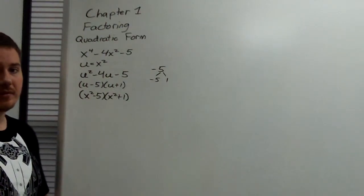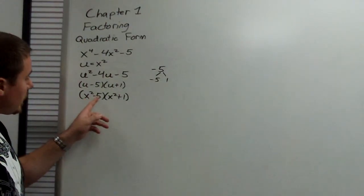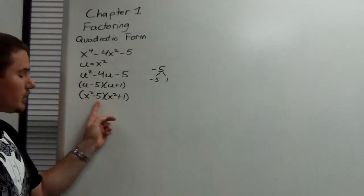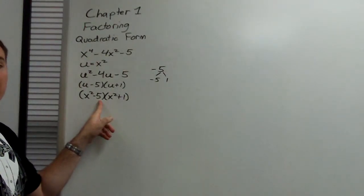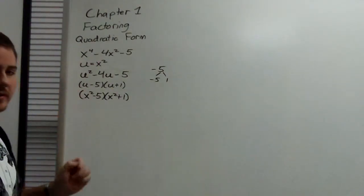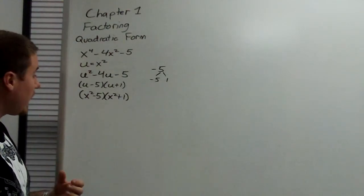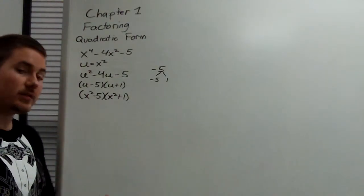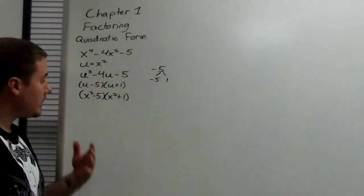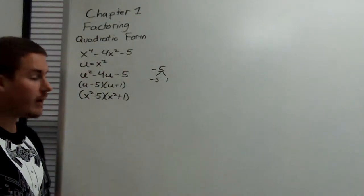Now, we may have more steps, but we need to check. x squared minus 5. If that 5 were a perfect square, we'd be tempted to do difference of squares and proceed to factor it further. But, we can't. x squared plus 1, there is no formula for sum of squares, so that is prime. With two prime factors, we're done.